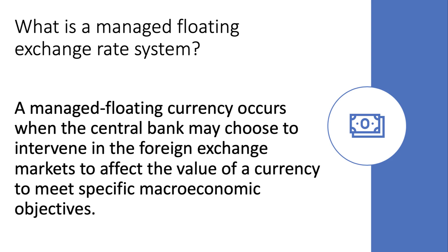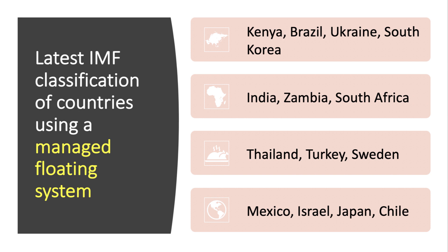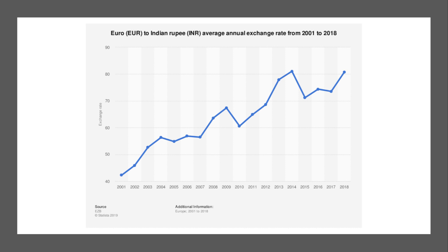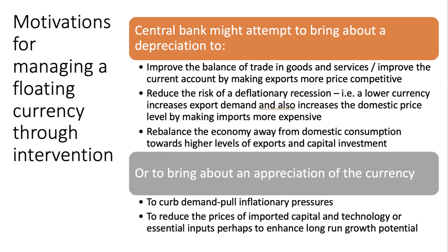The latest IMF classification of countries using a managed floating system includes Brazil, South Korea, India — the Indian rupee is a managed floating system — as is the Thai baht, the Mexican peso, and the Japanese yen. Many countries opt for a managed float; indeed more countries use this than a free floating system. Here's an example: the euro set against the rupee — a managed floating currency — showing that over a 17-year period the Indian rupee has depreciated against the euro, from about 42–43 rupees per euro in 2001 to over 80.